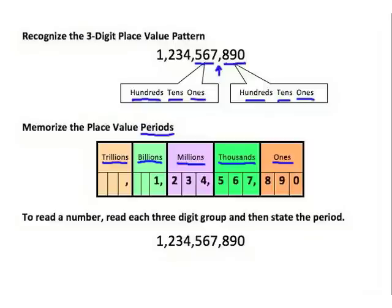Let's take a look at this example. I start over at the left with the largest period and the largest place value. That digit is in the billions period — so I would say one billion. Then I read the next group: two hundred and thirty-four million. Then five hundred and sixty-seven thousand. And finally eight hundred and ninety. Notice we don't say the ones period for that last group — it's understood. So the full number is: one billion, two hundred and thirty-four million, five hundred and sixty-seven thousand, eight hundred and ninety.